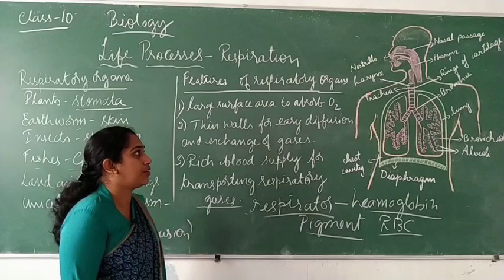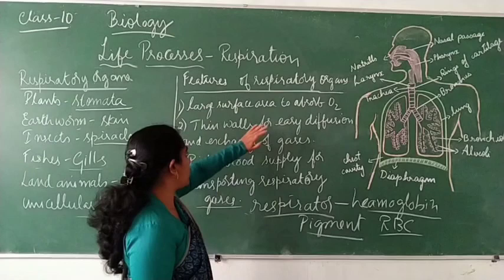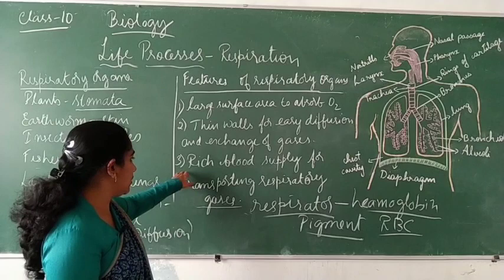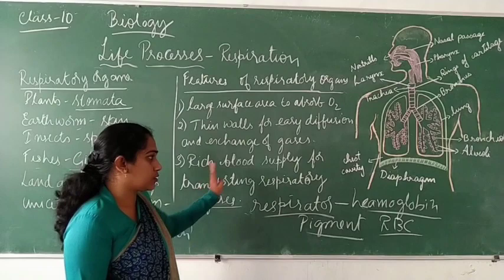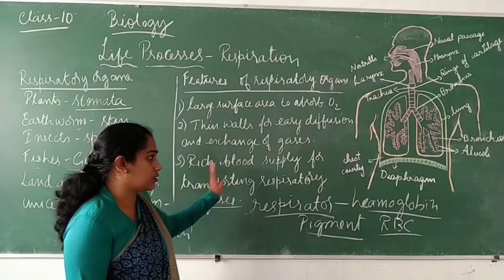So the three features required for all respiratory organs are: large surface area to absorb oxygen, thin wall for easy diffusion of respiratory gases, and rich supply of blood for transporting respiratory gases. These are important exam points.